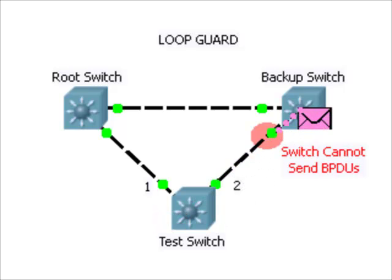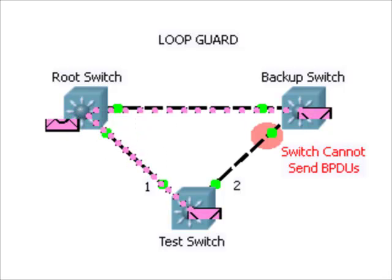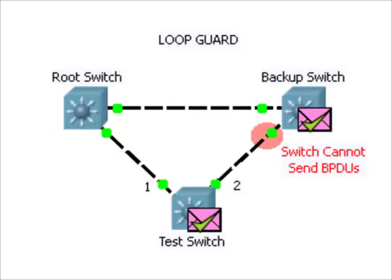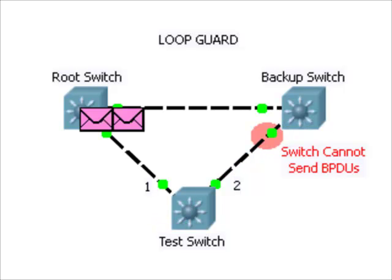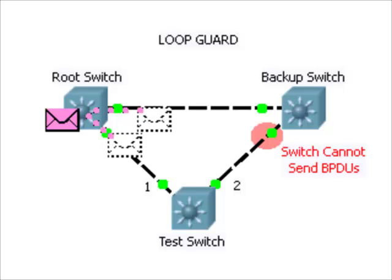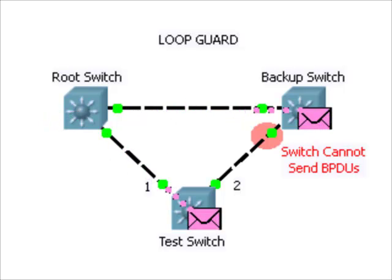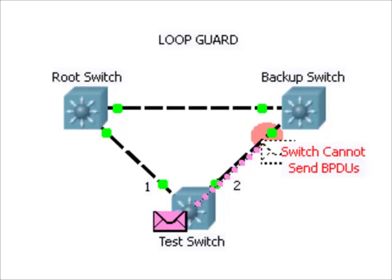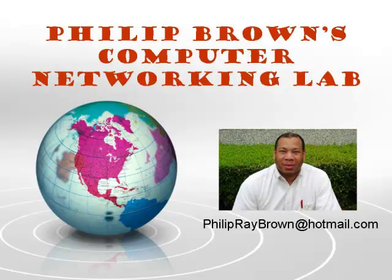Loop Guard protects against missing BPDUs from switched neighbors caused by software problems. In the next video, we will be looking at UDLD, also known as Unidirectional Link Detection, which protects from wiring configuration problems usually associated with fiber optic cables. Cisco recommends that you use both Loop Guard and UDLD to protect your switch network. We saw how loop guard can protect a network from switching loops caused by unidirectional links.